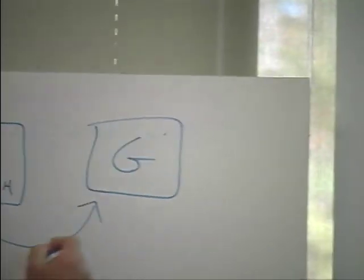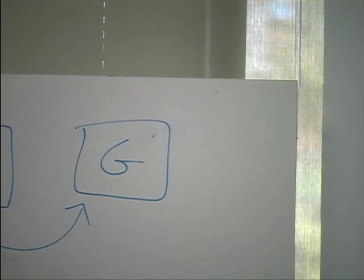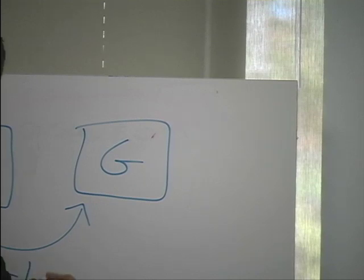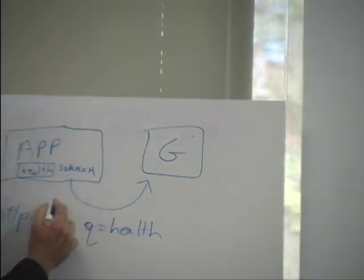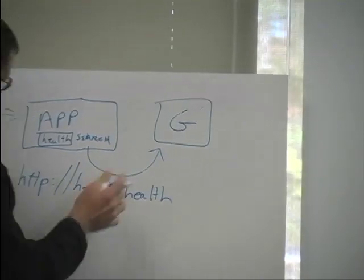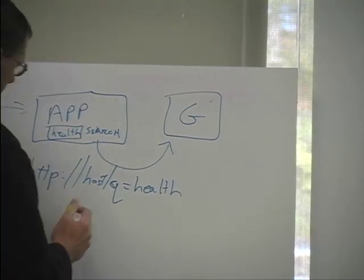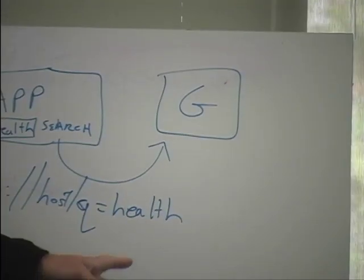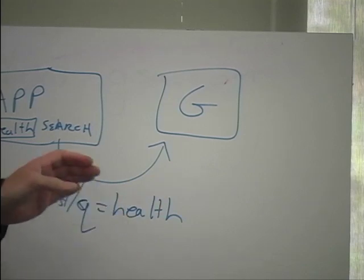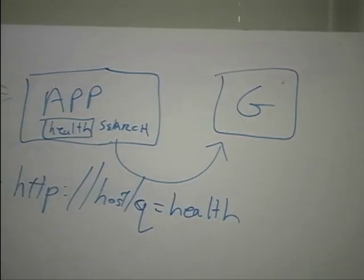The Search Appliance uses an HTTP URL interface, meaning all you have to do is send it a GET request with the URL, and the URL string has all the parameters in it. Q is the query term. So the URL will include the host, the action will be 'search', the query term will be there, the number of results you want to get back, and the sort order — whether it's date or relevance.